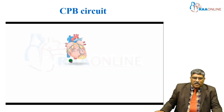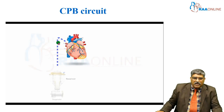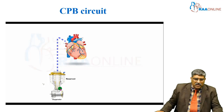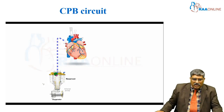Coming to the cardiopulmonary bypass circuit, you have the blood from the inferior vena cava and superior vena cava going into the right atrium. From the right atrium, it goes into the venous reservoir via drainage, where the blood gets stored, and from there it goes into the arterial pump.